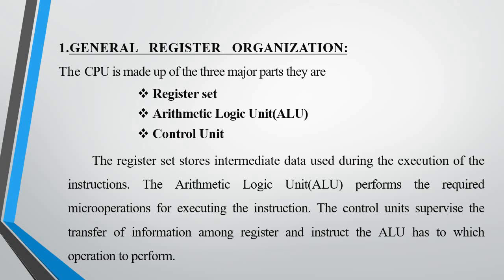The CPU is made up of three major parts. They are: Register Set, Arithmetic Logic Unit (ALU), and Control Unit. The Register Set stores intermediate data used during the execution of instructions. The ALU performs the required micro-operations for executing the instruction. The Control Unit supervises the transfer of information among registers and instructs the ALU as to which operation to perform.